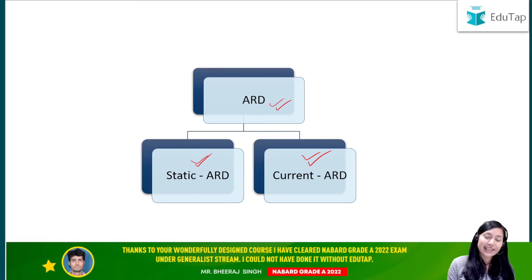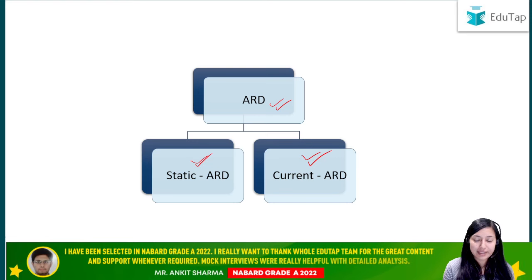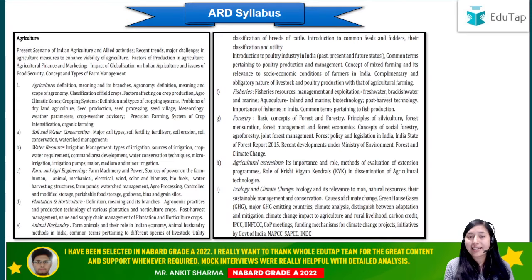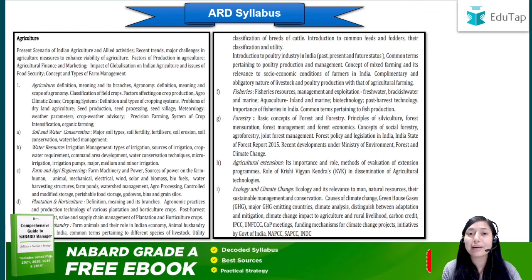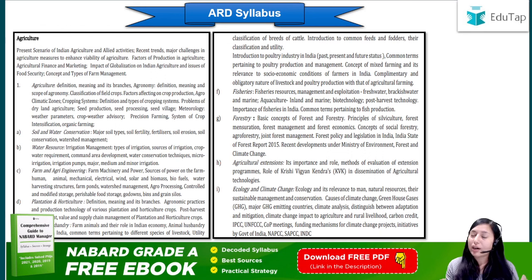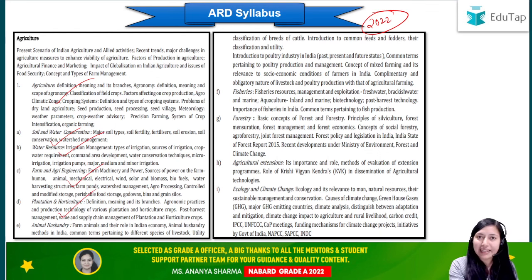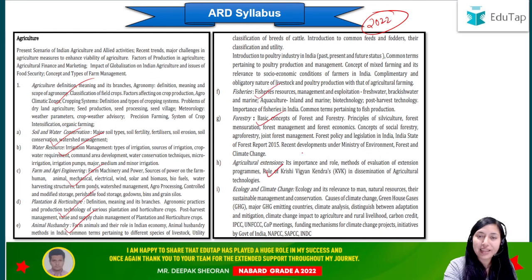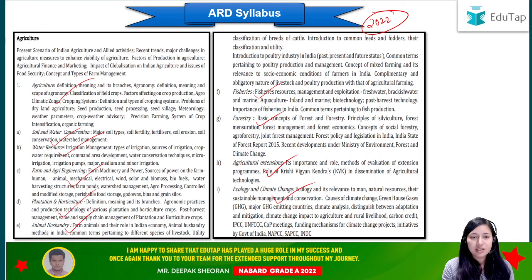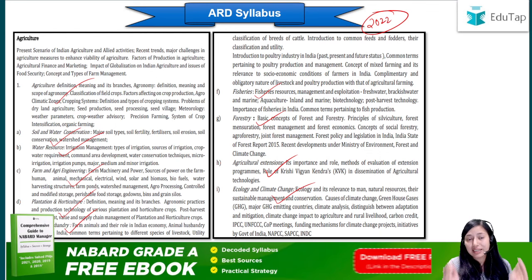Now let us see how to cover your static ARD first. For covering static ARD, you should have knowledge of the syllabus defined by NABARD. This is the syllabus from the 2022 notification. It comprises all the important chapters of agriculture: general agriculture, soil and water conservation, water resources, farm and agriculture engineering, plantation and horticulture, animal husbandry, fisheries, forestry, agriculture extension, and ecology and climate change. The syllabus confines your area of study.